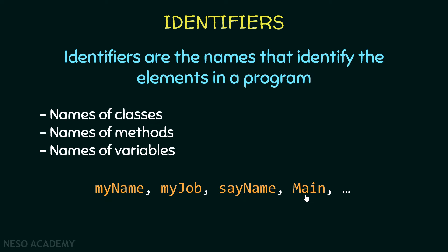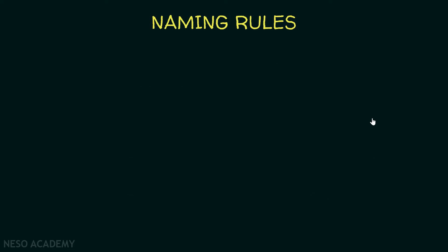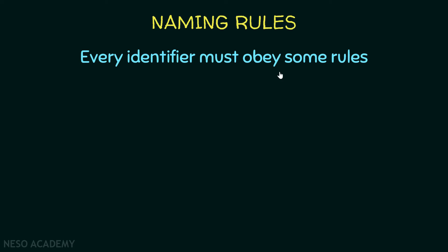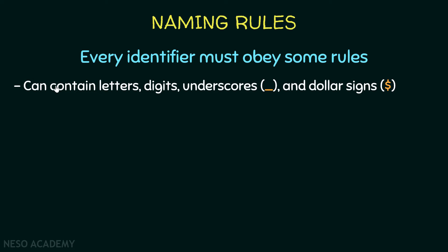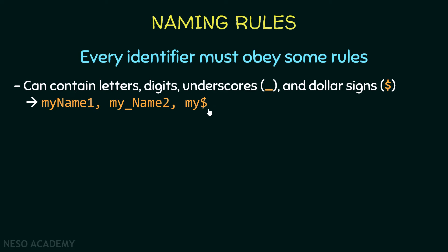Identifiers are the names of our classes, methods, and variables. Now let's talk about naming rules. Every identifier must obey some rules. First, an identifier can contain letters, digits, underscores, and dollar signs — we cannot use anything other than this. For example, myName1, myName2, and myDollar are valid identifiers.